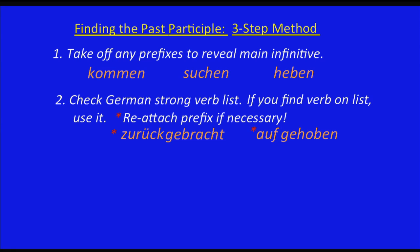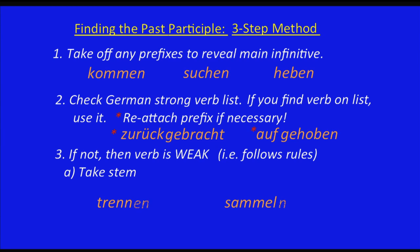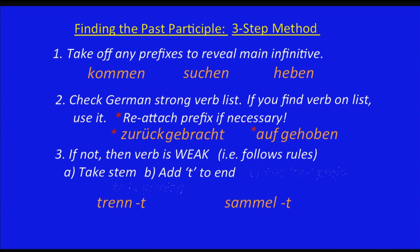Now, you check the German strong verb list. What if the verb is not on the list? Then it is weak. By weak, we mean it follows the rules — it's not strong enough to do its own thing. So what do you have to do? You take the verb, take the stem and remove the ending. So if we've got two verbs — 'trennen' und 'sammeln' — we take that ending off. We've got the stem. Then we add a T to the end, and then we add a GE prefix to the beginning. And then we have our participle.